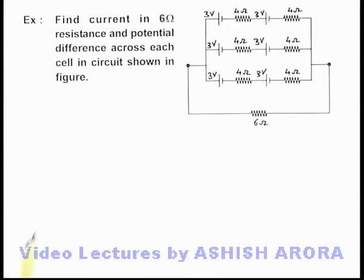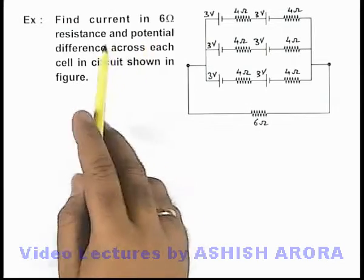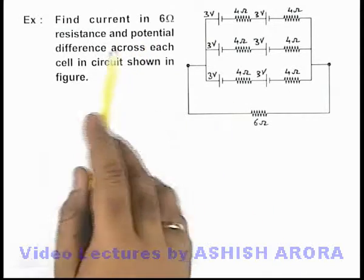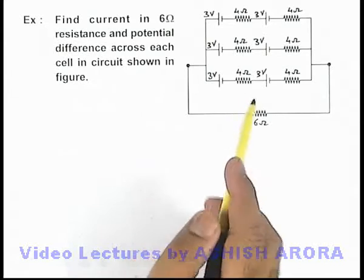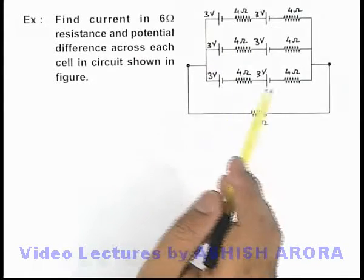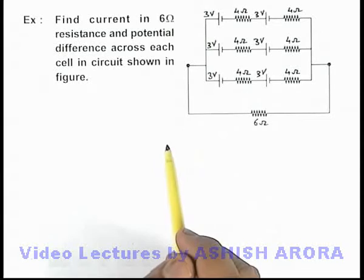In this example we are required to find the current in 6 ohm resistance and potential difference across each cell in the circuit shown in figure. Here there are 6 cells, all identical with EMF 3 volt and internal resistance 4 ohm.